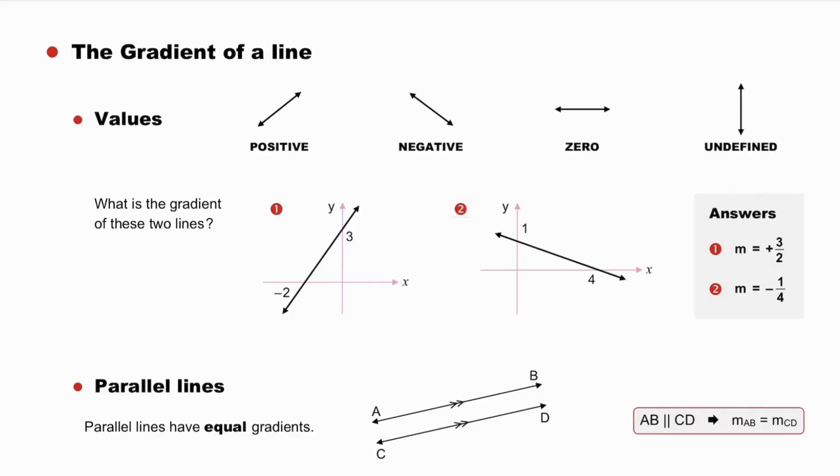What is the gradient of these two lines, line 1 and line 2? Pause while you think about it. Do not peep at the answers. We now return to look at the answers. The gradient of line 1 is plus 3 over 2, positive because the angle of inclination is acute. The gradient of line 2 is negative 1 quarter, negative because the angle of inclination is obtuse.